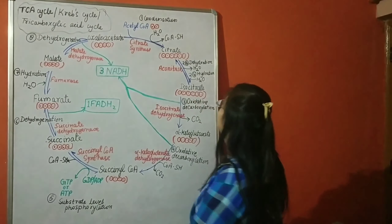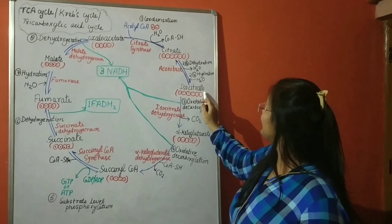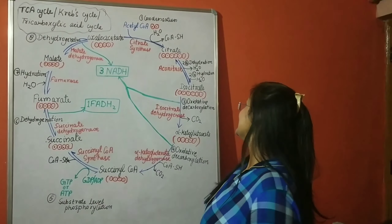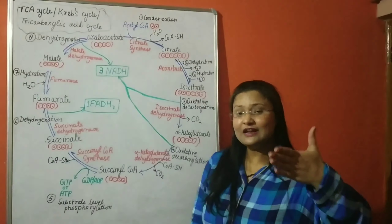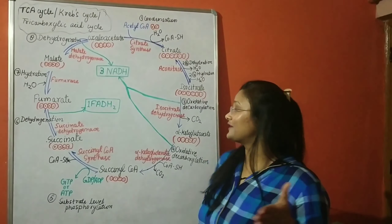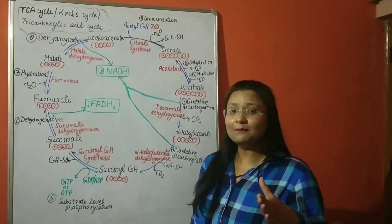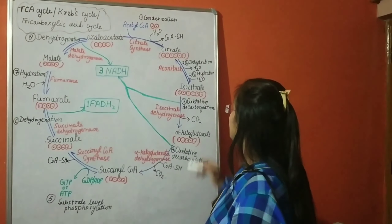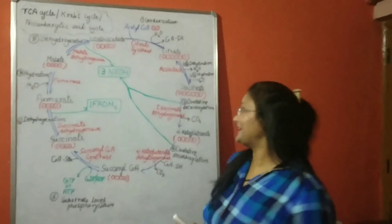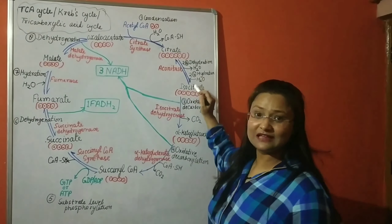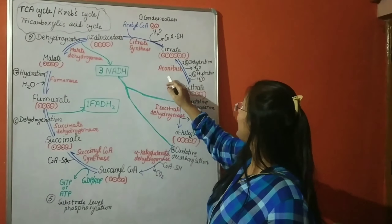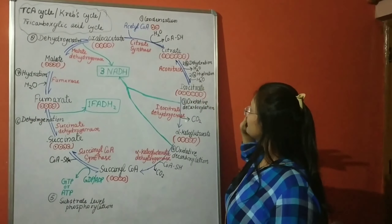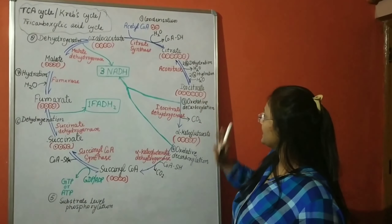The second step is the formation of isocitrate from citrate. This reaction is catalyzed by the enzyme aconitase. First, dehydration (loss of water) occurs and an intermediate compound called aconitate is formed, then rehydration occurs (water is added back). Isocitrate is formed, which is also a six-carbon compound.